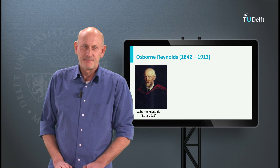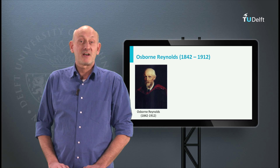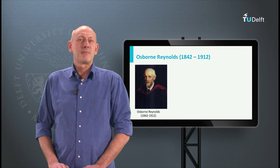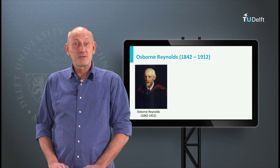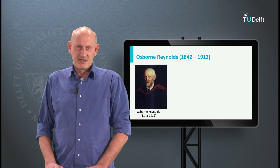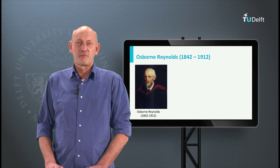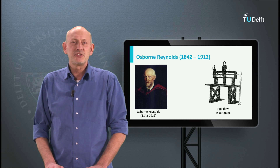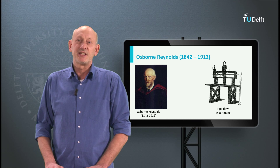Now back to the 19th century. In 1842, Osborne Reynolds was born in Belfast, Ireland. Already at a very young age, Osborne Reynolds liked mathematics and mechanics. He graduated at Cambridge University. He was a bright man, and despite his lack of experience, at the age of 26 he was appointed professor to the chair of engineering at what was to become the University of Manchester. His most important work and a major contribution to the understanding of fluid flow was published in 1883.